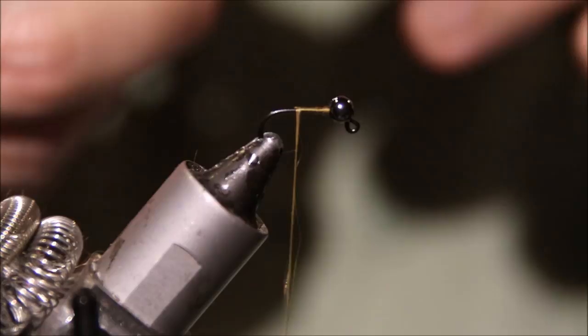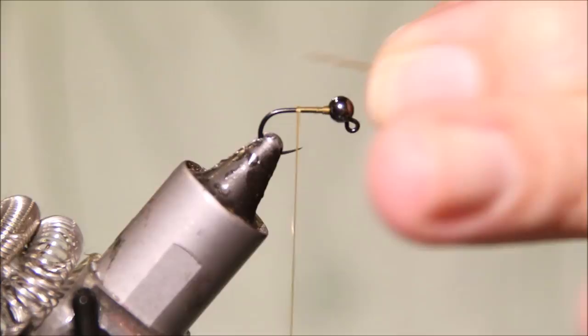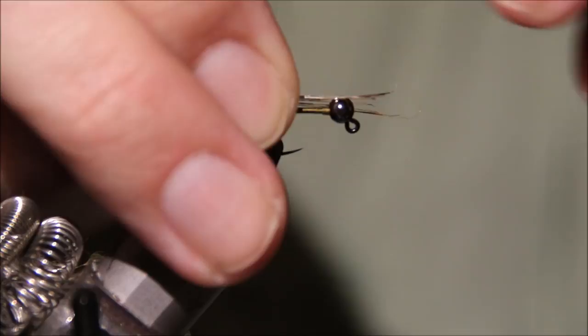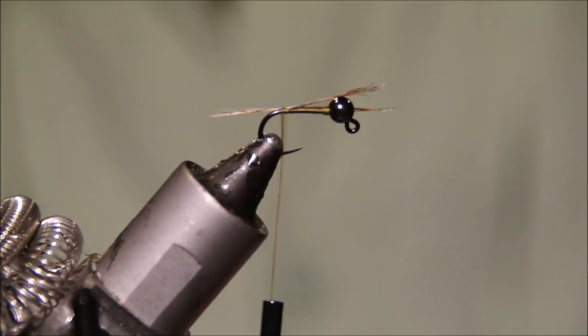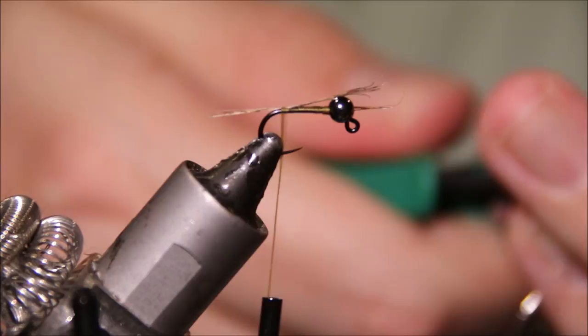Tail is as usual cock-de-leon and it's got a shank length. So come in, just take a turn to hold it. And then the rib, I'm going to rib it with some small silver wire. This is just the UTC wire, you can use whatever you like.